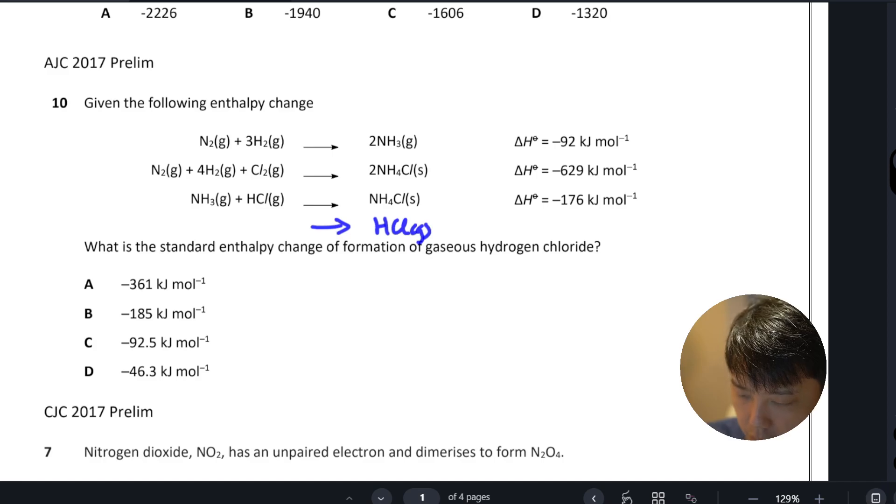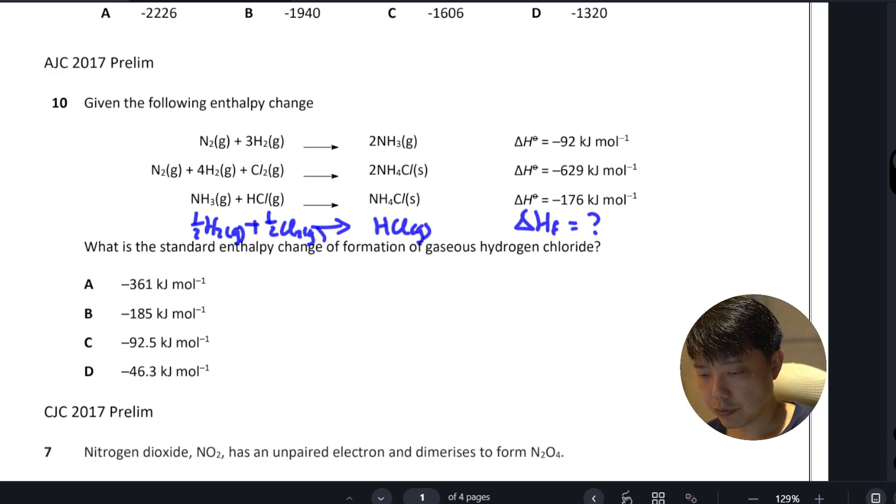Yes, you will need formation, right? So you need half H2 gas plus half Cl2. Okay, so this is your equation. So we're supposed to come out with an energy cycle, or you can use the products minus reactants, right? Find the delta H reaction. So I think I will do the energy cycle.